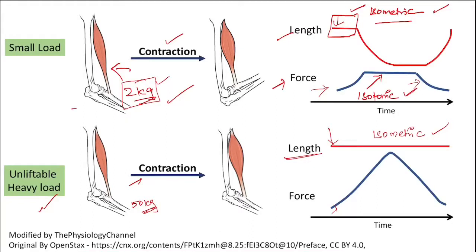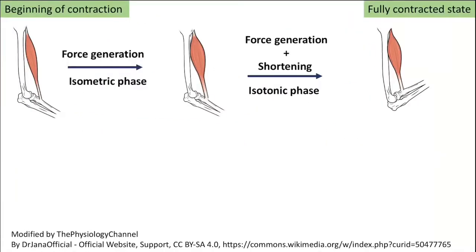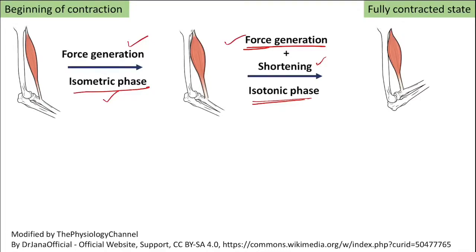Cardiac muscle is similar to this type of contraction. In skeletal muscle, the isometric phase at the beginning involves no change in length but there is force production. The second isotonic phase involves shortening of the muscle and a decrease in length. Similar things happen in cardiac muscle as well, with both similarities and differences.